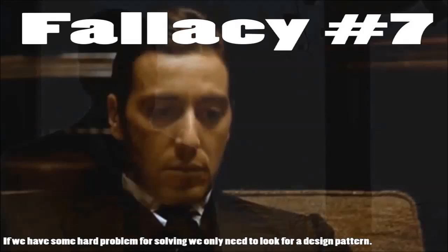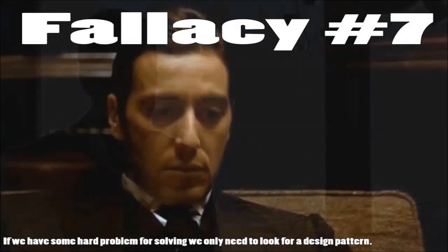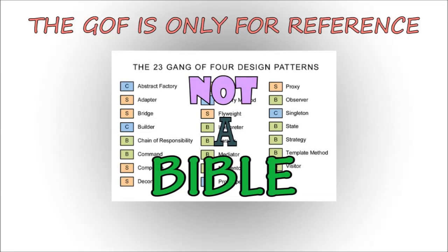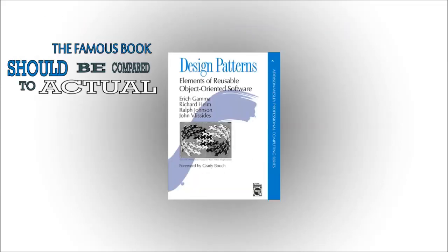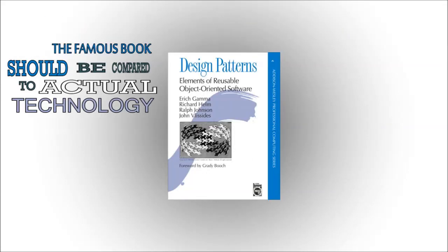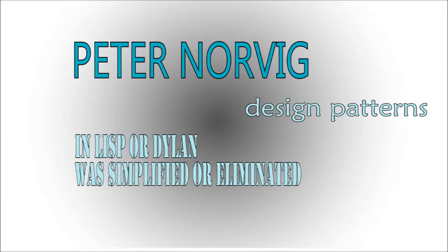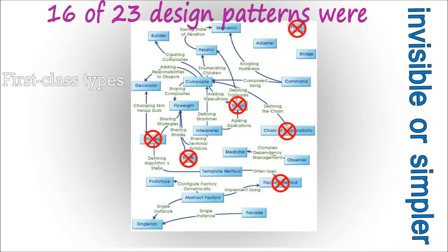Fallacy 7. If you have some hard problem to solve, one needs to look for a design pattern. This is not so easy. GoF was written for reference, not a bible for programmers. Peter Norvig demonstrates that 16 out of 23 patterns in the design patterns book are simplified or eliminated in Lisp or Dylan. 16 of 23 patterns are either invisible or simpler.